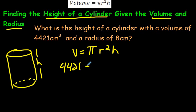4421. Pi is 3.14. The radius they've given us as 8. So they've given us the radius of 8 and we're supposed to find the height. This is the part we don't know.